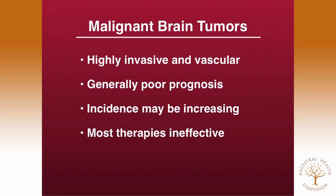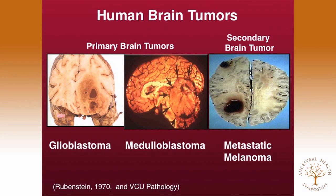I'd like to talk now a little bit about brain cancer specifically. These are highly invasive and vascularized tumors with generally poor prognosis. Incidence may be increasing through cell phone use, but only for individuals susceptible to this. Unfortunately, most therapies for brain cancer are ineffective in managing the disease. There are two major categories: primary and secondary brain tumors. Glioblastoma is a primary brain tumor — one of the worst, with very poor survival after five years. About 22.5% of all cancer deaths come from metastasis, the movement of cancer cells from some other organ to the brain.